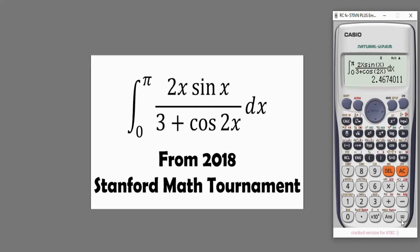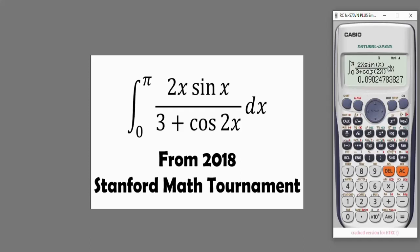Now let's put this calculator in degree mode and see what we're going to have — whether we're going to have 2.46 as the answer. Let's press equals. So we have 0.9, which is different from 2.46. So that's why I always recommend working with radian mode. By judgment, this answer is not the standard answer to this question. The standard answer to this question is 2.46.